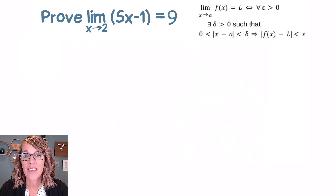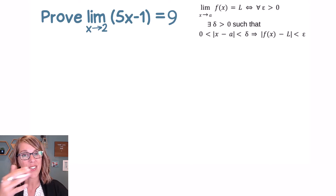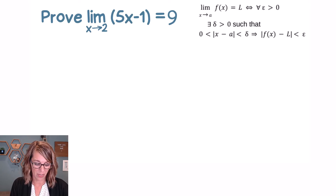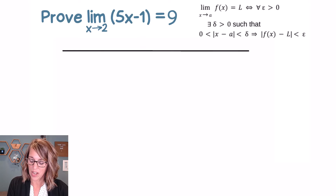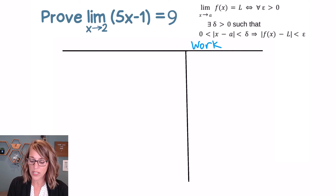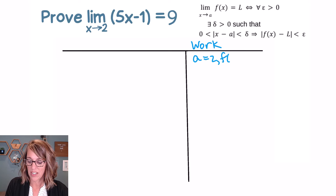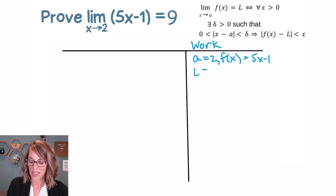Let's do one more — I'd love it if you paused to see how far you can get on your own. This is another linear function, so I know automatically what I want delta to be. Setting up my work side: A is equal to 2, my function is 5x minus 1, and my limit value is equal to 9.